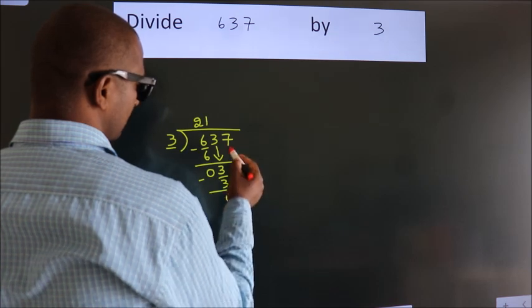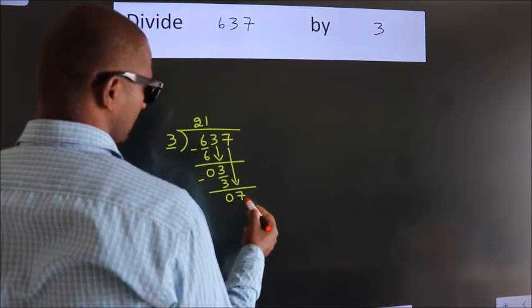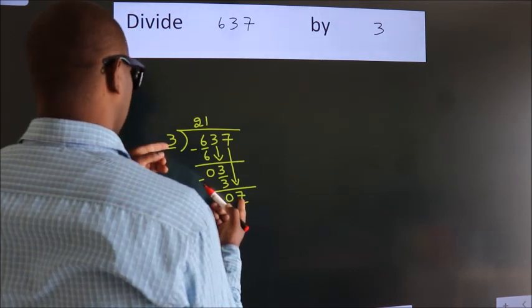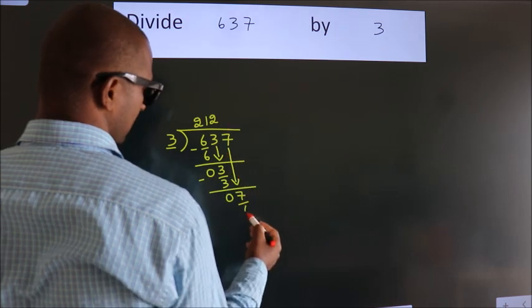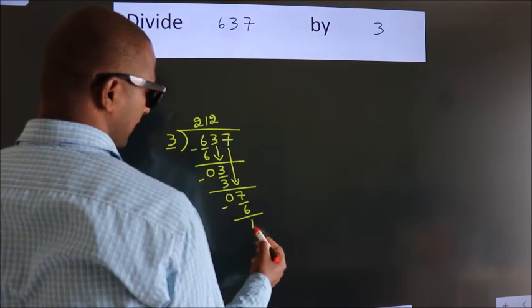After this, bring down the beside number. So, 7 down. A number close to 7 in the 3 table is 3 times 2, which is 6. Now, we subtract, we get 1.